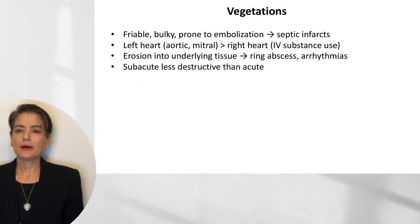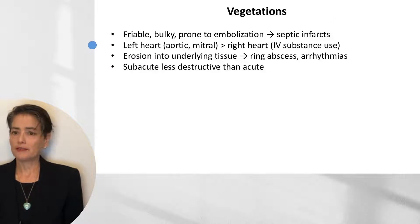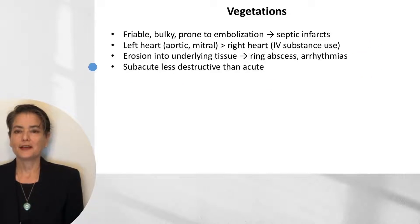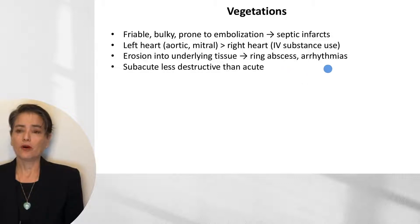The vegetations in infective endocarditis tend to be friable and bulky, prone to embolization leading to septic infarcts. They tend to affect the left heart — aortic and mitral valves — more commonly than the right heart. Right heart involvement is associated with IV substance use, which is a classic clinical vignette in exam questions. Vegetations can be aggressive with erosion into underlying tissue leading to a ring abscess, and if they involve the cardiac pacemaker cells they can cause arrhythmias.